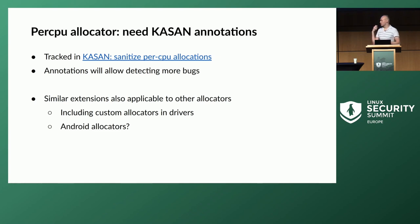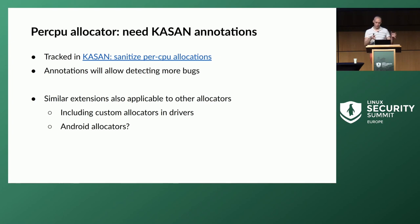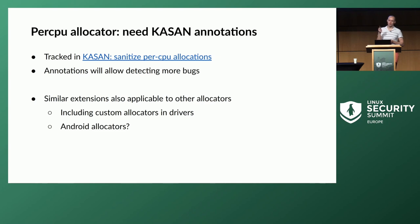This is not only applicable to the per-CPU allocator — if you know about other allocators, you can implement support for them too. Many beefy drivers like GPU drivers have their own custom allocators. Android has Binder, Ashmem, Ion, and other allocators that might theoretically be applicable too.